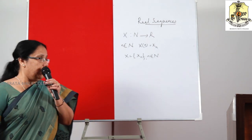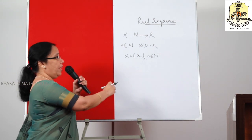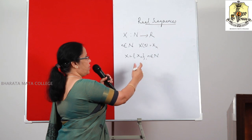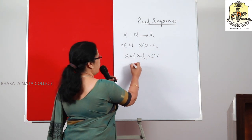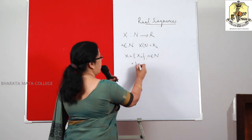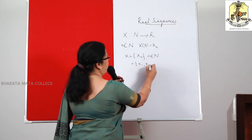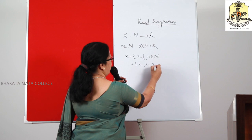X_N are called the terms of the sequence. As N varies from 1, 2, 3, etc., we get the terms as X1, X2, X3, etc.